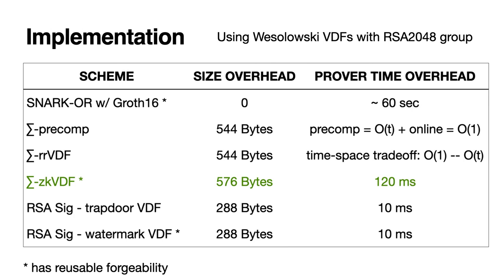We implement our constructions using Wesolowski VDFs with the RSA 2048 group. Our constructions are actually quite practical, adding just about half a kilobyte of size overhead to our sigma-proof versions. Our construction using ZKVDFs notably has reusable forgeability and induces a fraction of a second overhead for the prover, 120 milliseconds here.